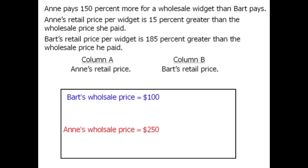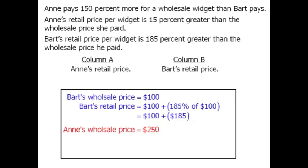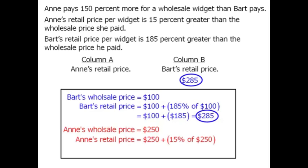Now Bart's retail price is 185% greater than the wholesale price, so his retail price will be the wholesale price of $100 plus 185% of $100. Well, 185% of $100 equals $185, so the retail price is $285. Now Ann's retail price is 15% greater than the wholesale price, so her retail price will be the wholesale price of $250 plus 15% of $250. This is equal to $287.50.